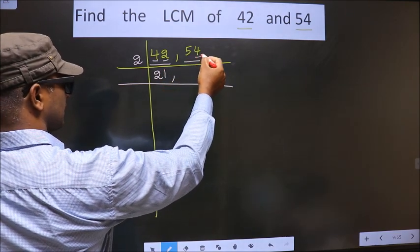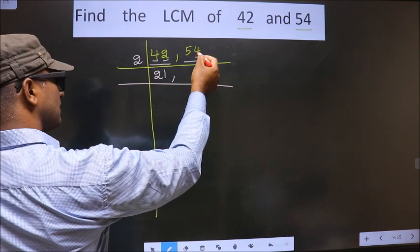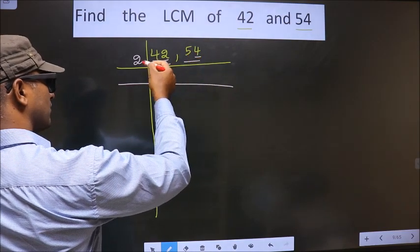Now, the other number. Last digit is 4, which is even, so this number also divisible by 2.